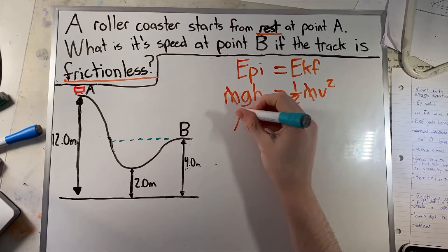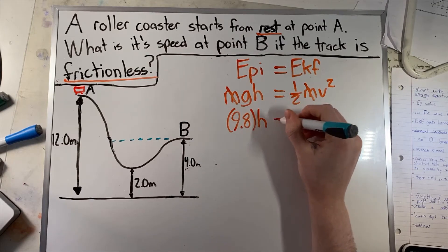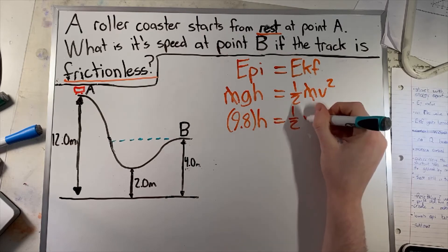So now gravity on Earth is 9.8 meters per second squared, which is 9.8 times the height, which equals one half velocity squared.